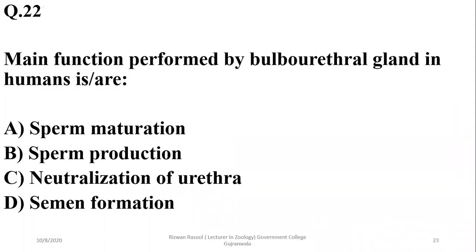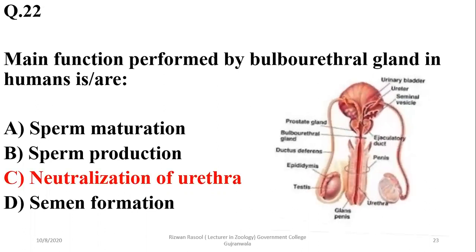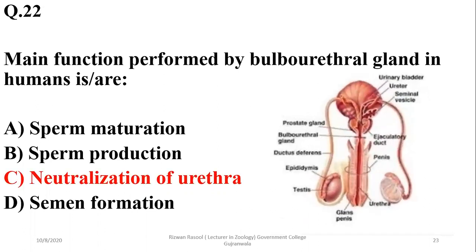Number twenty-two: the main function performed by the bulbo-urethral gland in humans is neutralization by the production of alkaline secretion, and neutralization of the urethra helps in the easy passage of the sperms.